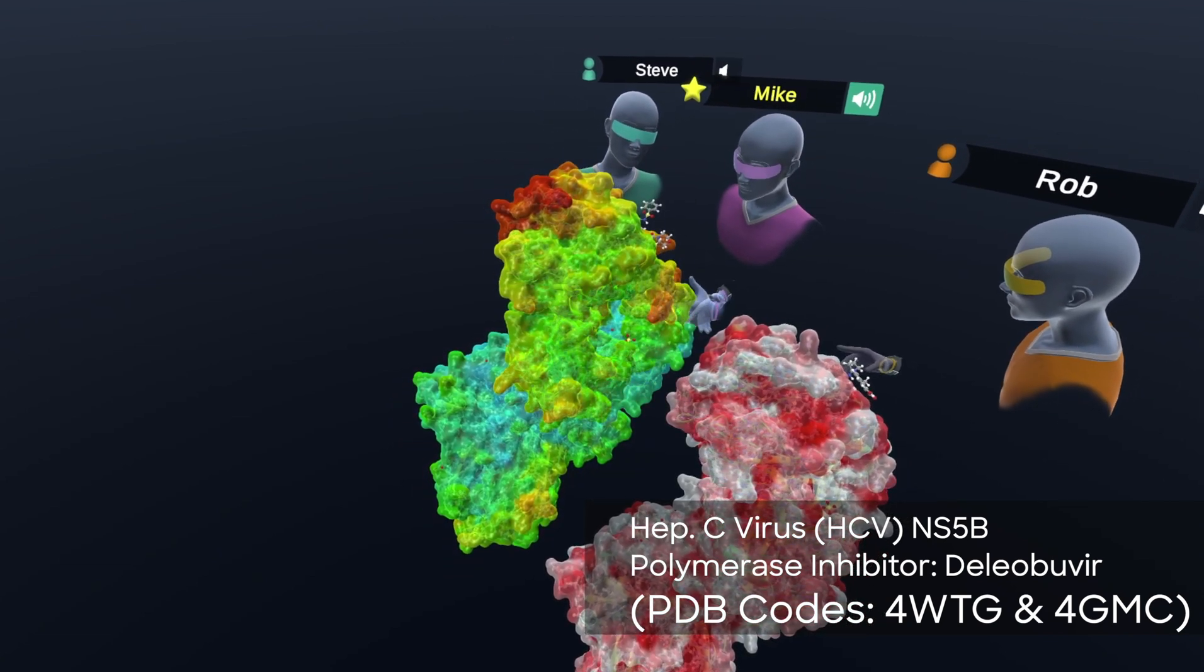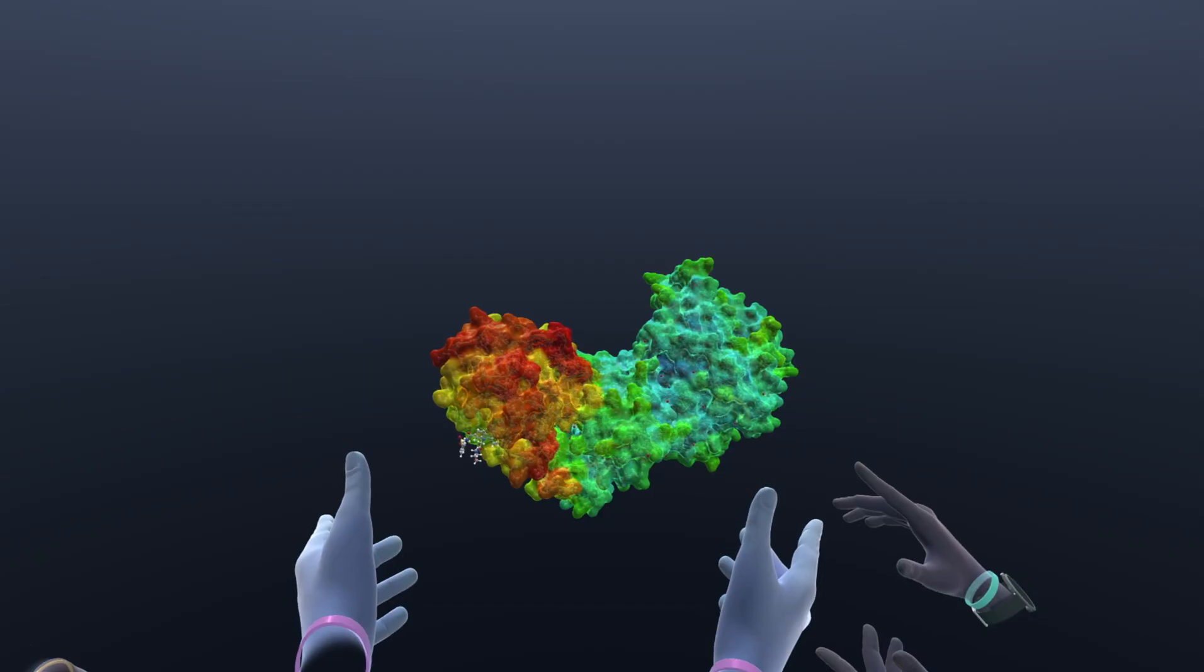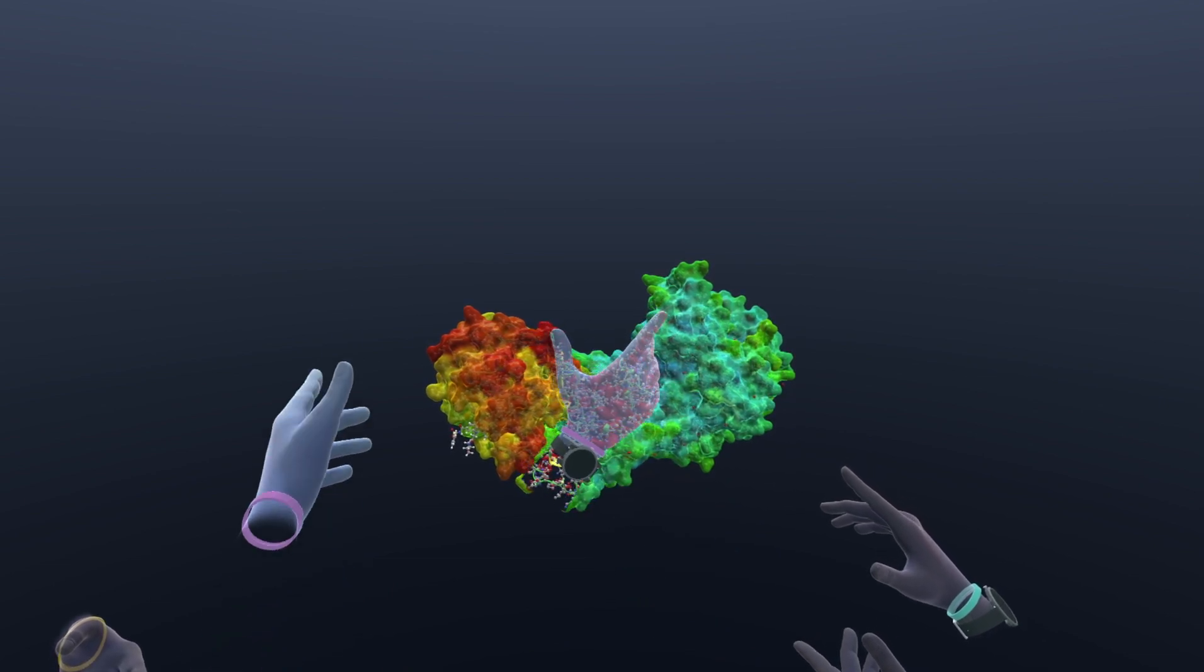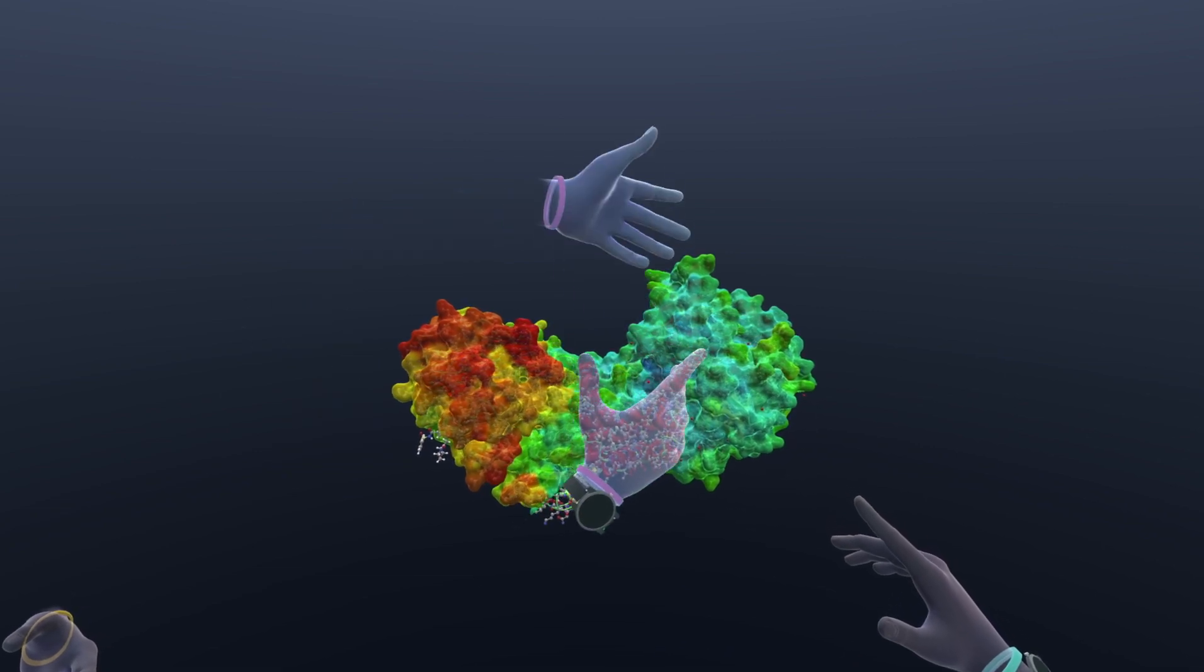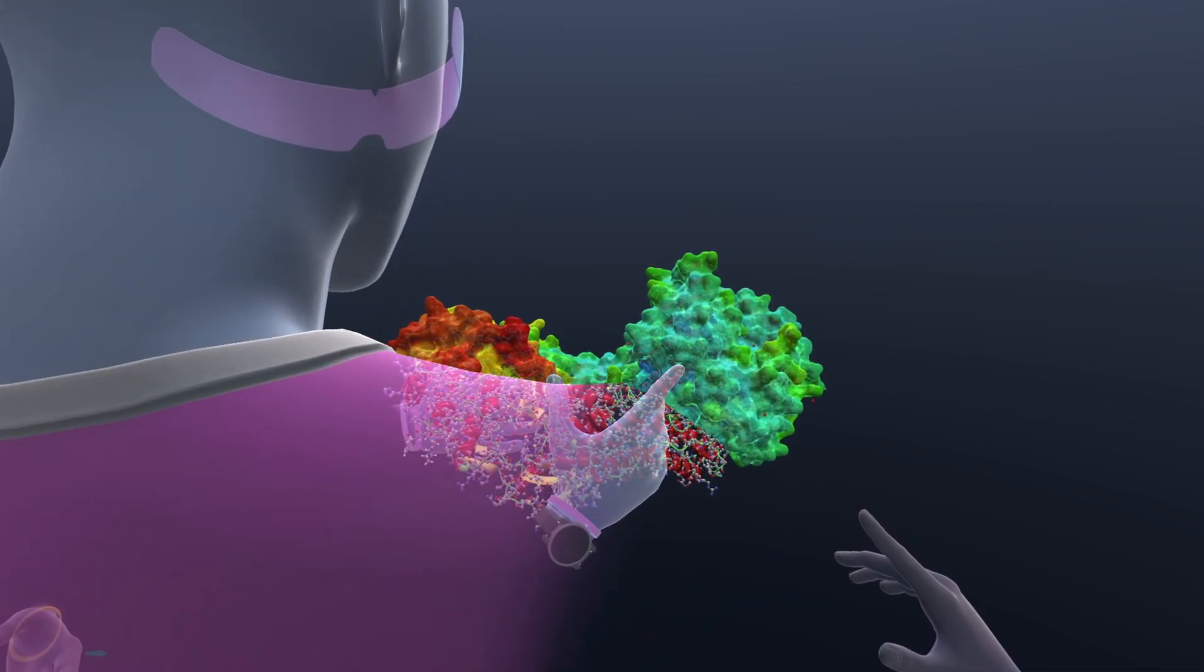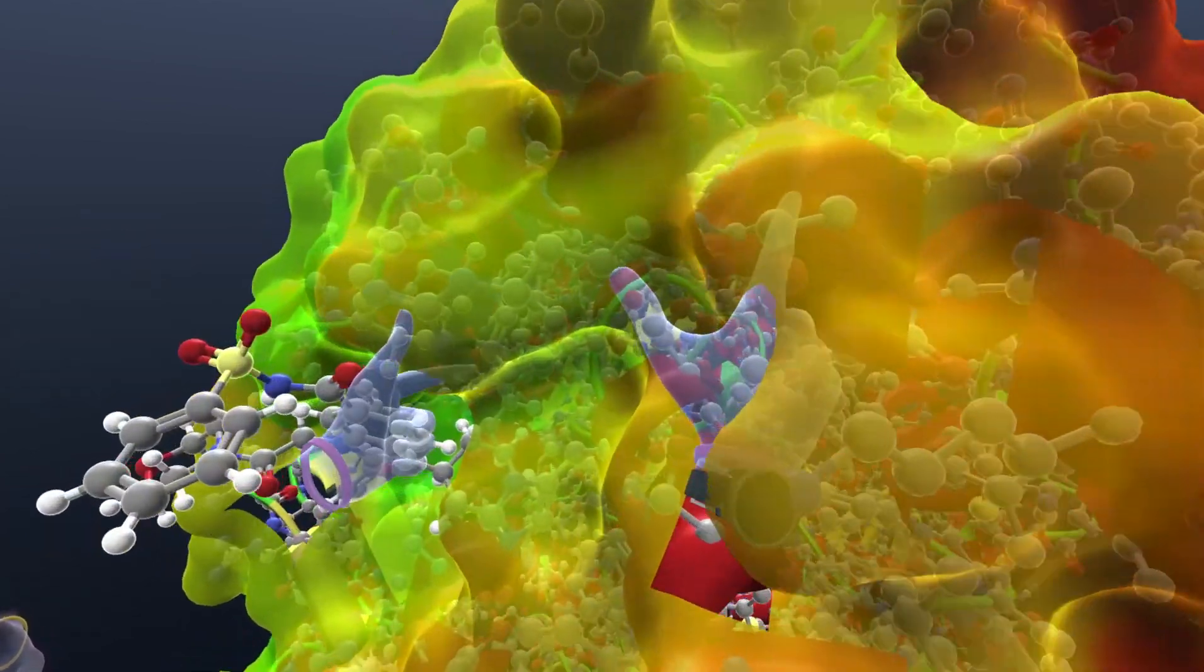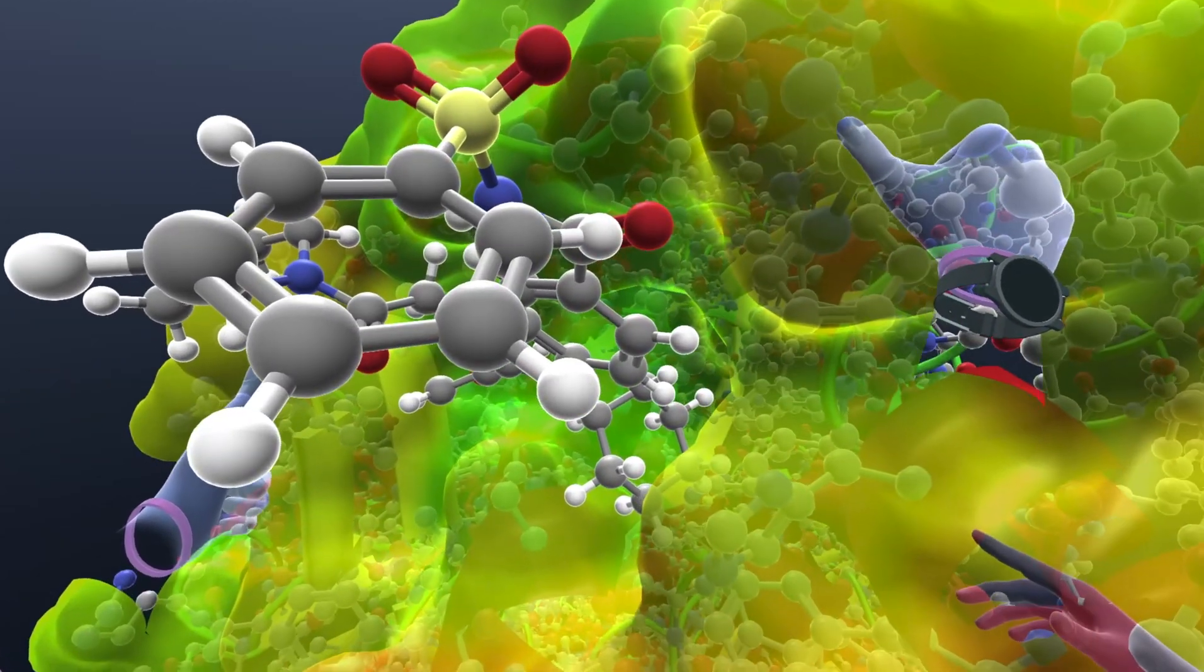This is an early molecule from Boehringer Ingelheim. NS5B is shaped more or less like a hand - here's the thumb, so we have a thumb site inhibitor. We're going to talk about fingers over here and down below is the palm. We've got an allosteric inhibitor meaning it doesn't bind to where the enzyme does its business.